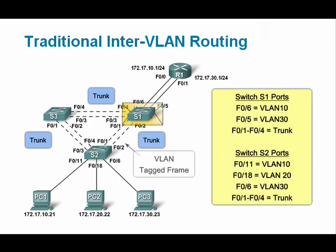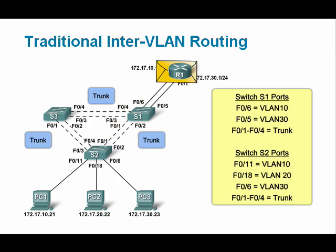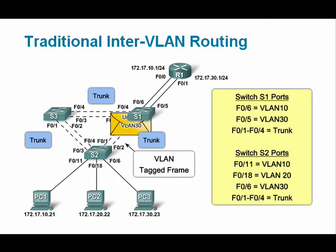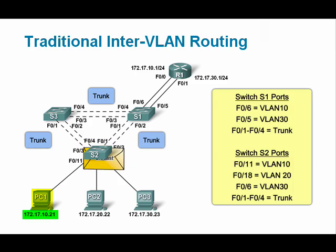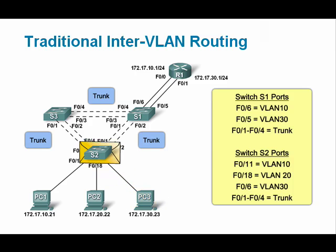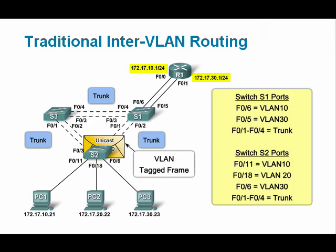With traditional interVLAN routing, the router uses a separate port for each VLAN. In this animation of traditional interVLAN routing, PC1 on VLAN 10 is communicating with PC3, which is on VLAN 30. Notice also that PC1 is at address 172.17.10.21, and PC3 is on a different IP subnet, 172.17.30.23. We know this by looking at the different router interface addresses, which specify a slash 24 mask.